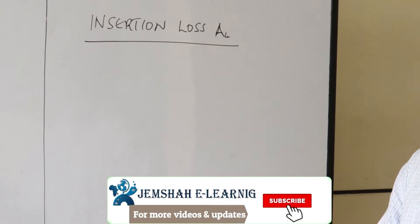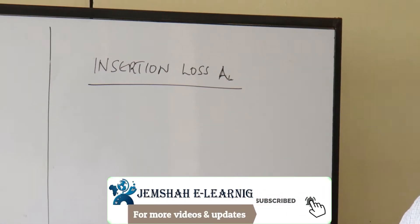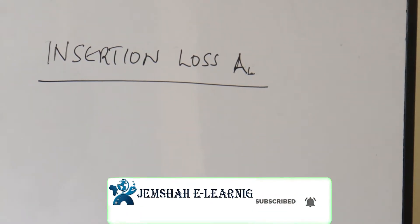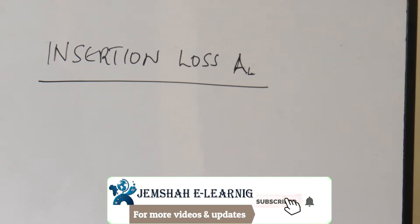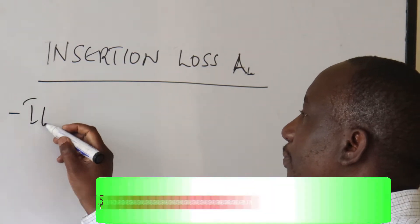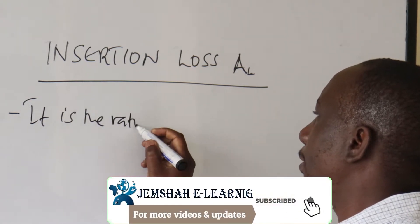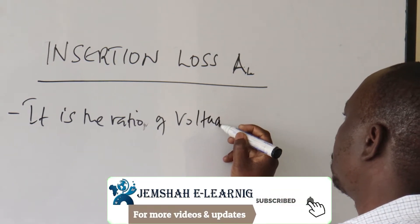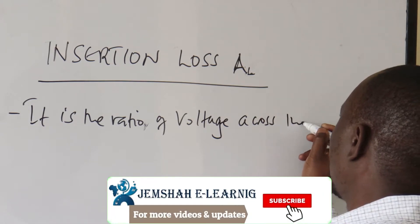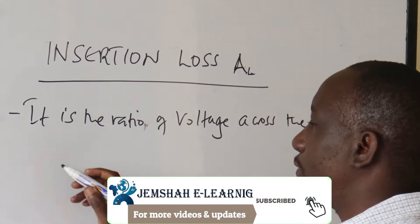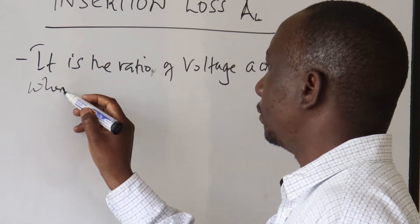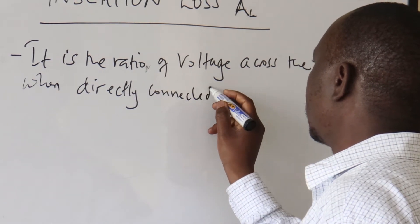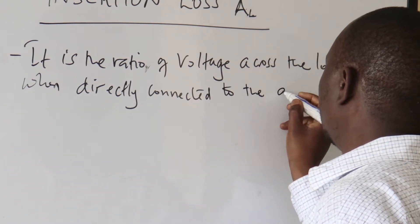Insertion loss is the loss at the point of termination. Sometimes we'll be asked to define the insertion loss. It's the ratio of the voltage across the load when directly connected to the generator.